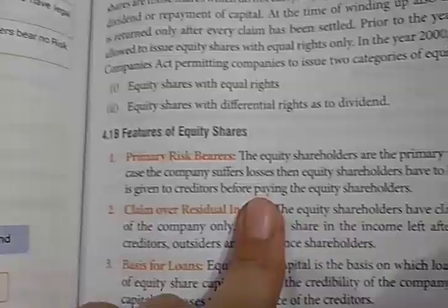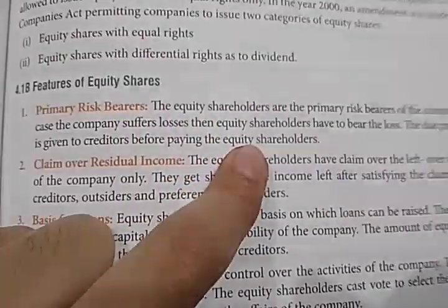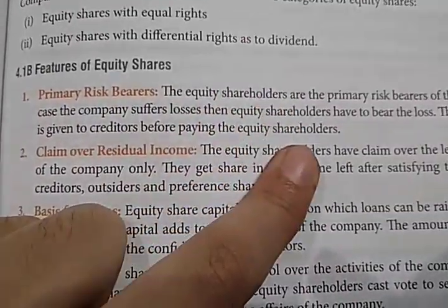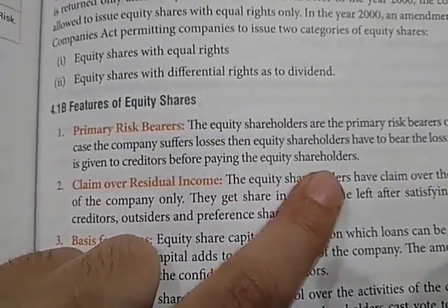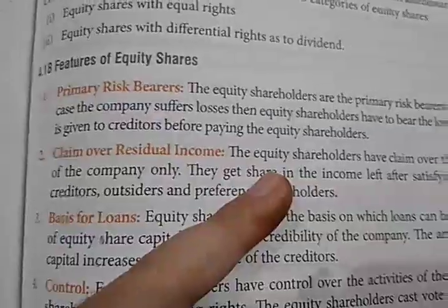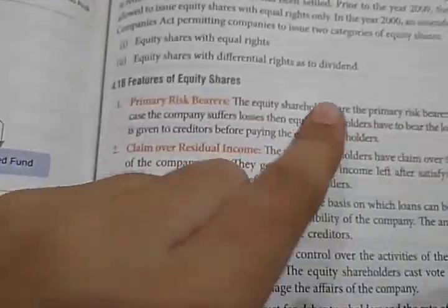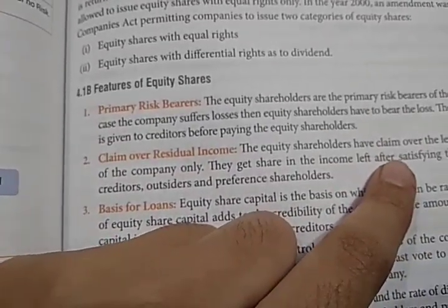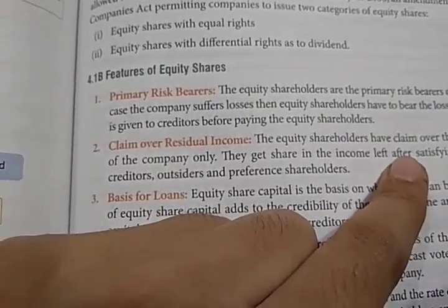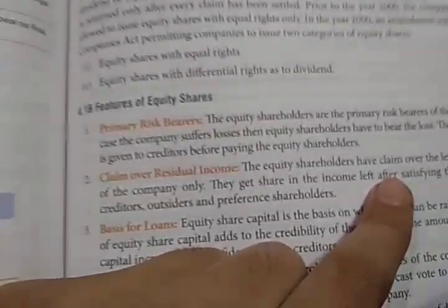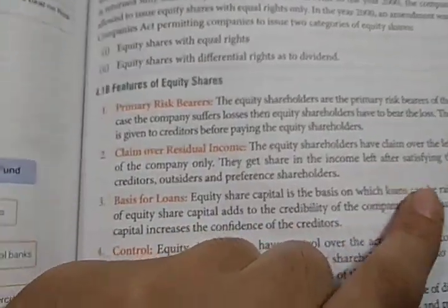Features of equity shares: First, equity shareholders are the primary risk bearers of the company. If the company earns profit, after paying all debts, the remaining profit is distributed among them. Similarly, if the company incurs a loss, equity shareholders have to bear those losses. The due payment is given to creditors before paying the equity shareholders, and all remaining losses are shared by equity shareholders.